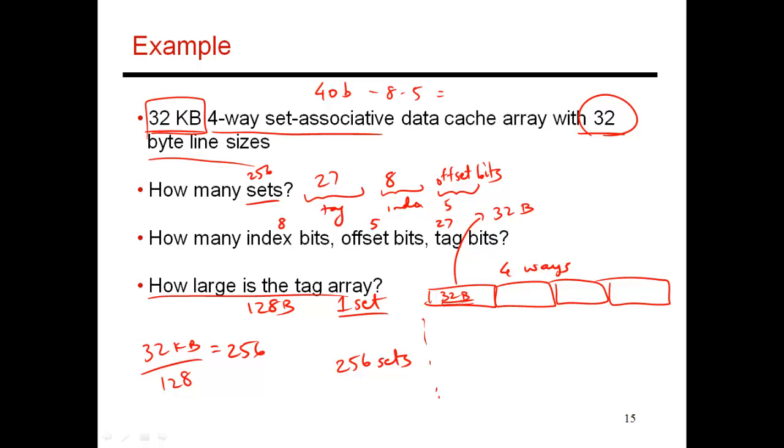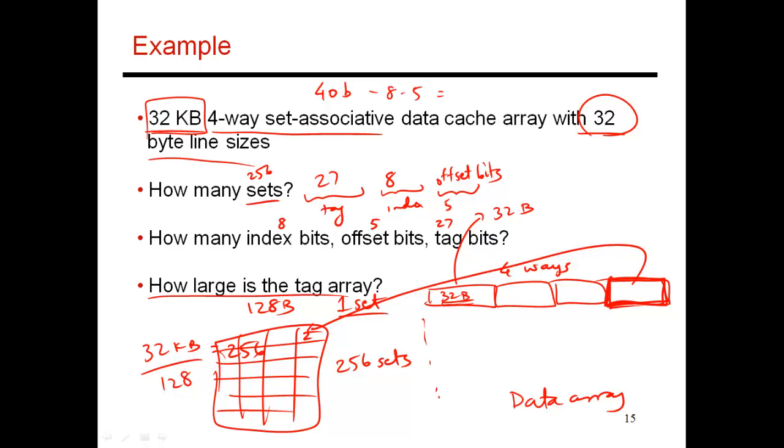So now there's also a question about how large is my tag array. So corresponding to every block I store in my data array, so this is my data array, and correspondingly I have the structure which is my tag array as well, which is going to mirror my data array. It's going to have four ways, and it's going to have as many sets. So corresponding to every block I save in my data array, I need to save its tag over here. And each tag is 27 bits. So 27 bits for each block. There are four ways in each set, and there are 256 sets. So this corresponds to 27 kilobits of data, or that's roughly 3.375 kilobytes of data. So it is much smaller than the data array, which stores 32 kilobytes of data. But it is non-trivial, so it has to be considered during the cache design.